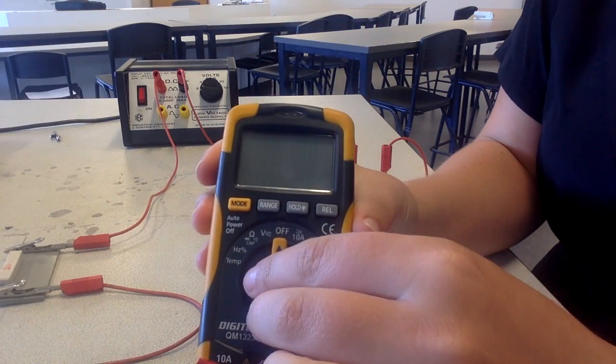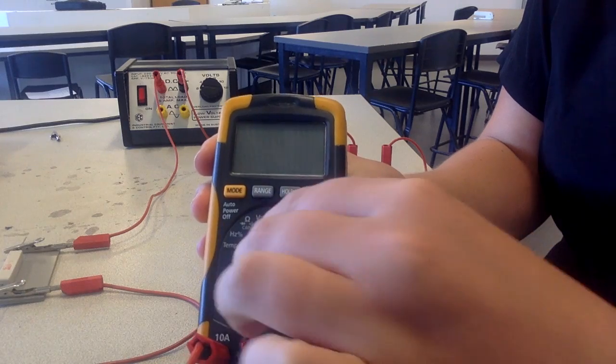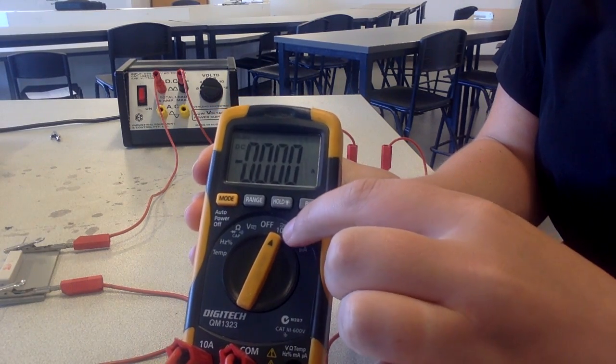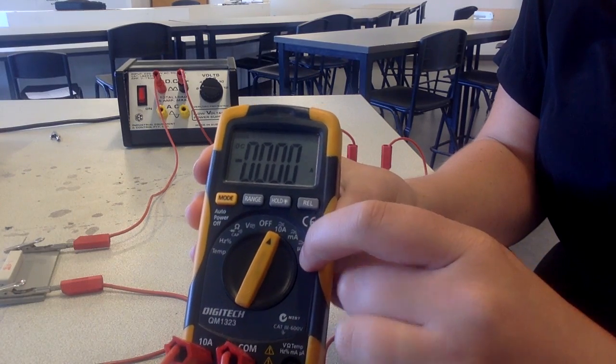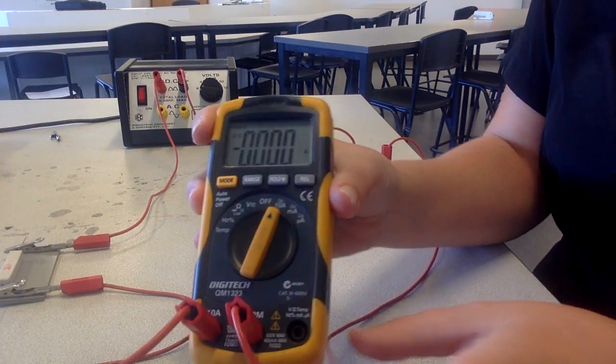Now to measure the current, we obviously need to turn it on and we're measuring current so we'll turn it to the bit where it says amps on here. That means it measures up to 10 amps. We'll probably be getting a few amps going through so we'll put it on 10 amps.